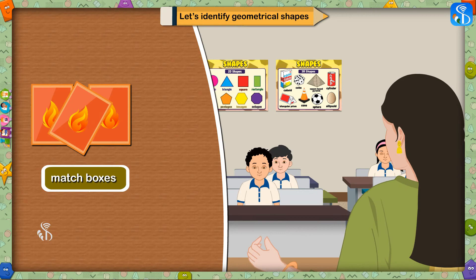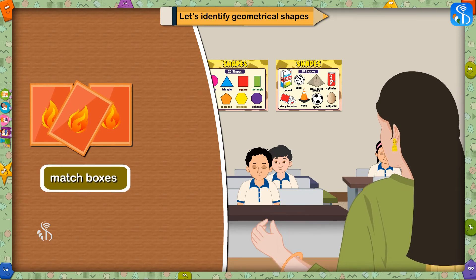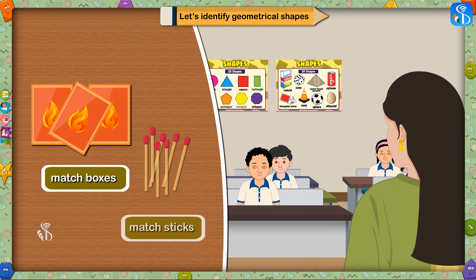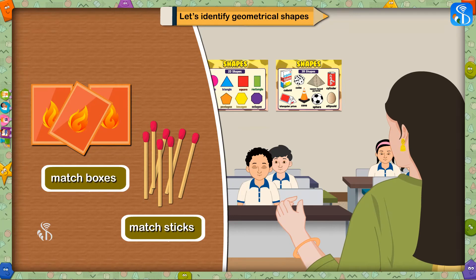Activity 2. Children, we have some match boxes here. We will make triangles and four-sided figures using the matchsticks in these boxes.